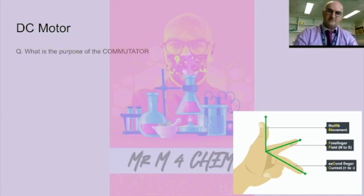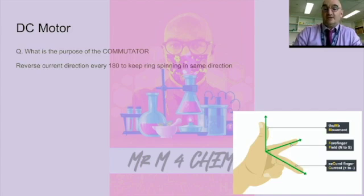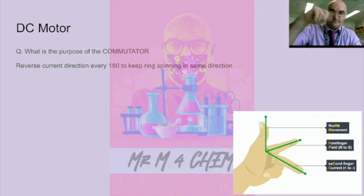So what's the purpose of the commutator? It's to reverse the current direction every 180 degrees to keep the ring spinning in the same direction. If it wasn't there, I'd be doing this backwards and forwards, backwards and forwards, flipping. That's what the commutator does.